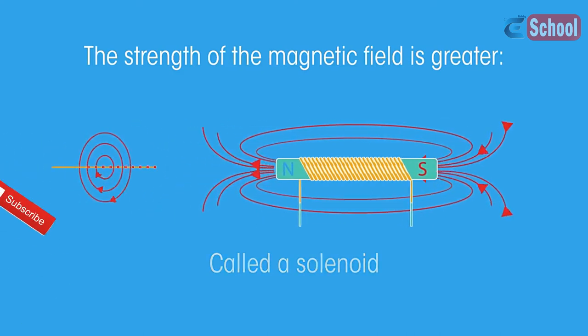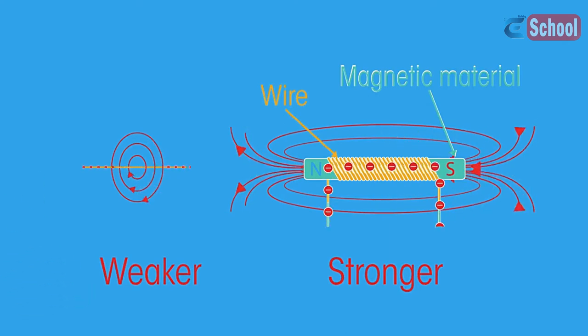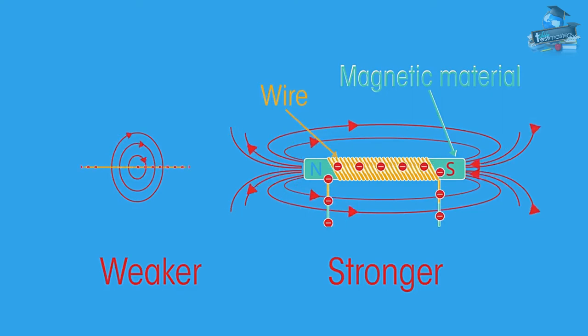The magnetic field around a straight wire isn't very strong, and so coiling the wire around an iron core creates a stronger electromagnet. This is sometimes known as a solenoid.